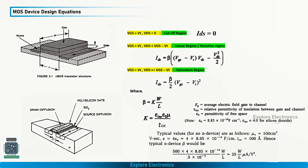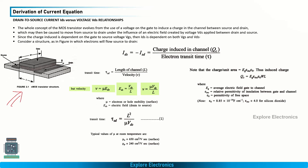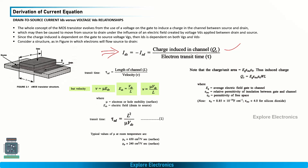Now let us derive the current expression. Looking at the 3D structure of the nMOS transistor, the source and drain regions are indicated, with a channel formed between them. The length L is the distance between source and drain, and W is the width extending further. The oxide layer of thickness d sits between the gate and the channel. The current IDS equals minus ISD, and can be written as the charge induced in the channel Qc divided by the electron transit time tau_SD.